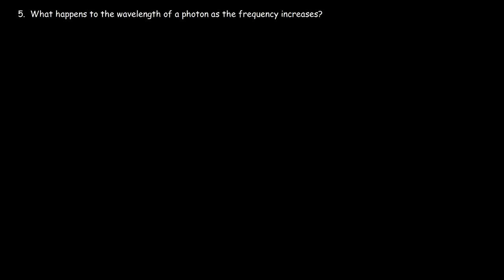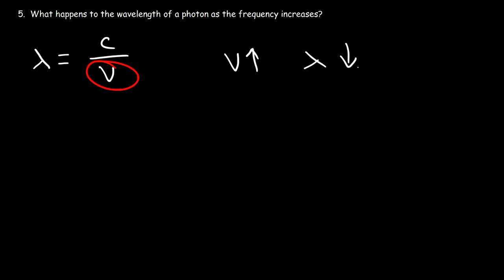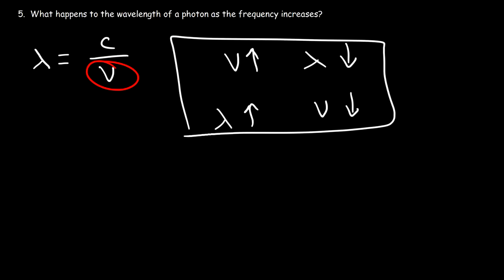Now, what happens to the wavelength of a photon as the frequency increases? Since wavelength equals the speed of light divided by frequency, frequency is in the denominator, meaning it is inversely related to wavelength. So as frequency increases, wavelength decreases, and vice versa — as wavelength increases, frequency decreases. These two are always inversely related to each other; when one goes up, the other goes down.